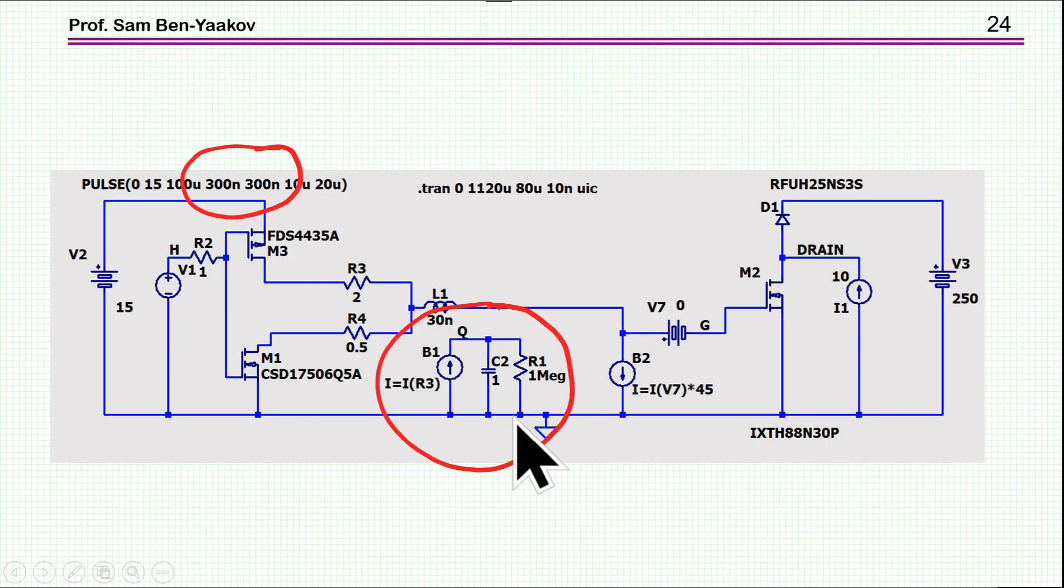To test the actual numerical value of this extra current, I've added here an integrator, this is a one farad capacitor, and I'm pumping in the current, which is duplicating the current here. So this is the total current getting into the combined transistor here, and then I'm integrating it to get actually the charge. So this is, the voltage here is the total charge that is fed to this assembly of transistors.